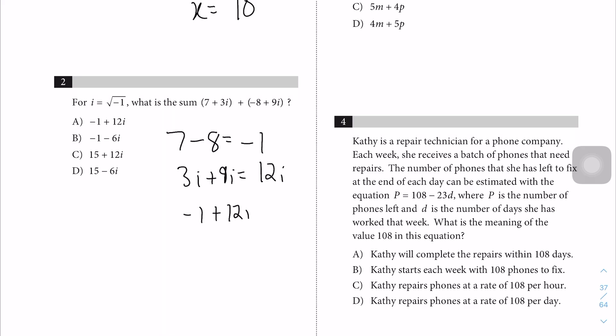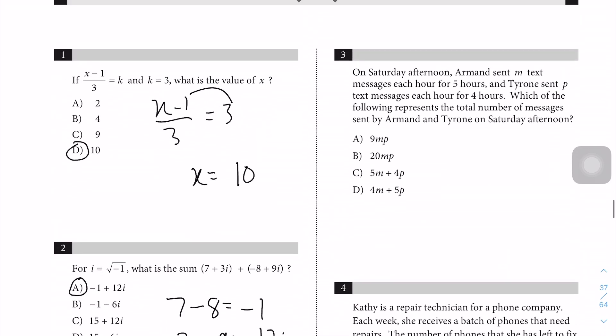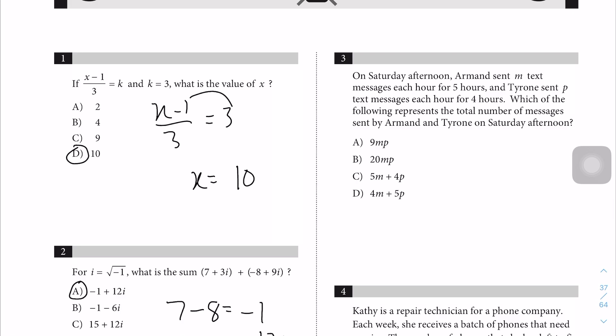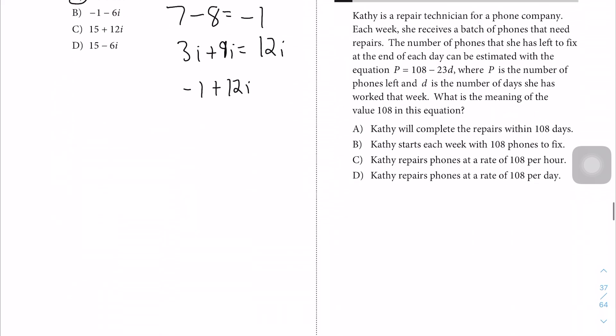Question 3: On Saturday afternoon, Armand sent M text messages each hour for five hours, and Tyrone sent P messages per hour for four hours. What is the total number of messages sent? Armand sent M texts per hour for five hours, so in total he sent 5M messages. Tyrone sent P messages per hour for four hours, so that's plus 4P. The answer is C.